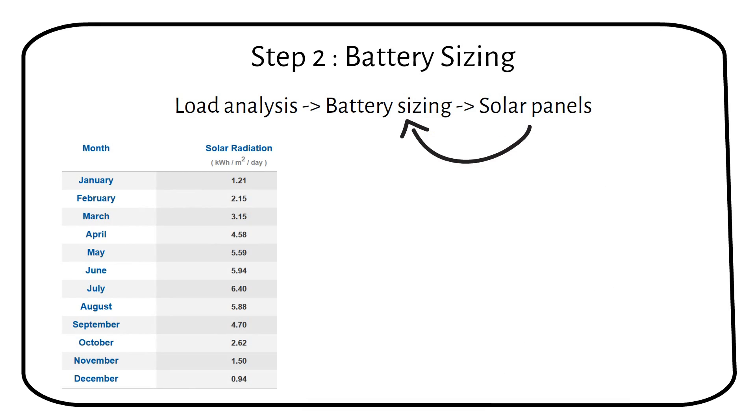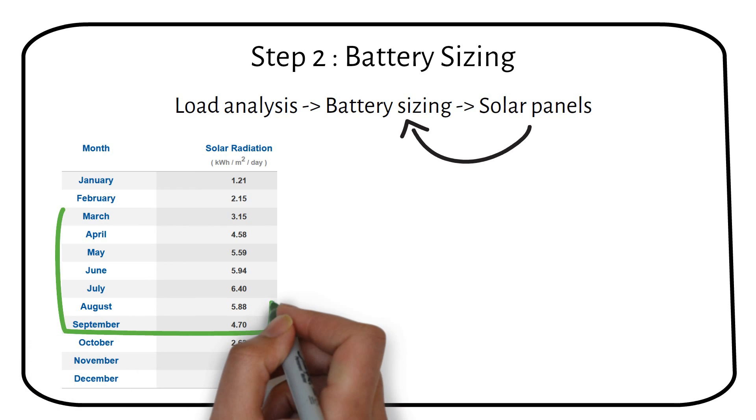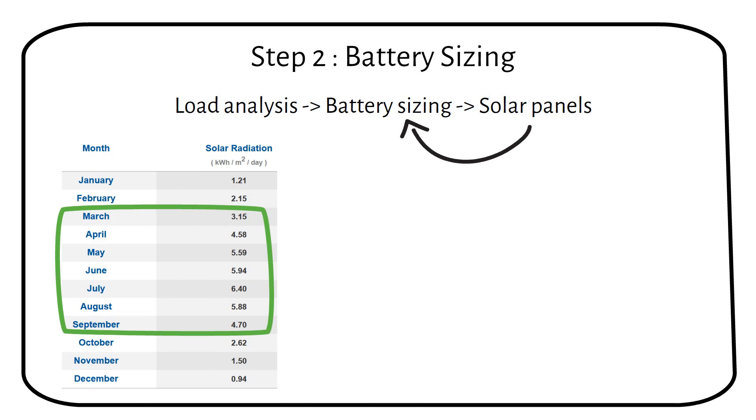When we look at the sun hours for Vancouver, we can see that we have several months over 3 sun hours. For the months without 3 sun hours, we will use a generator to recharge the battery. Using a generator will be cheaper than designing the system for a minimum of 1 sun hour in December. So we will work with 3 sun hours.